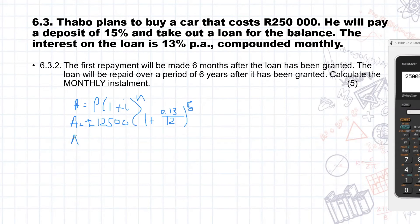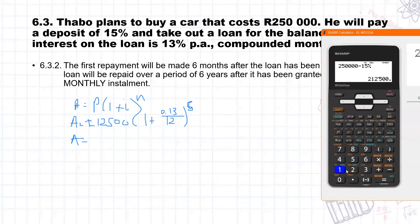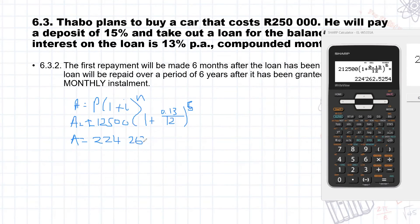Times one plus our interest is 13% compounded monthly, so divided by 12. And it is over six months, sorry, over five months, because the sixth month he actually makes payments. So if we just chuck that into our calculator, we will get 212,500 times one plus 0.13 over 12 to the power of five. And that gives us a value of R224,262.53. Remember to round off to two decimal places here.